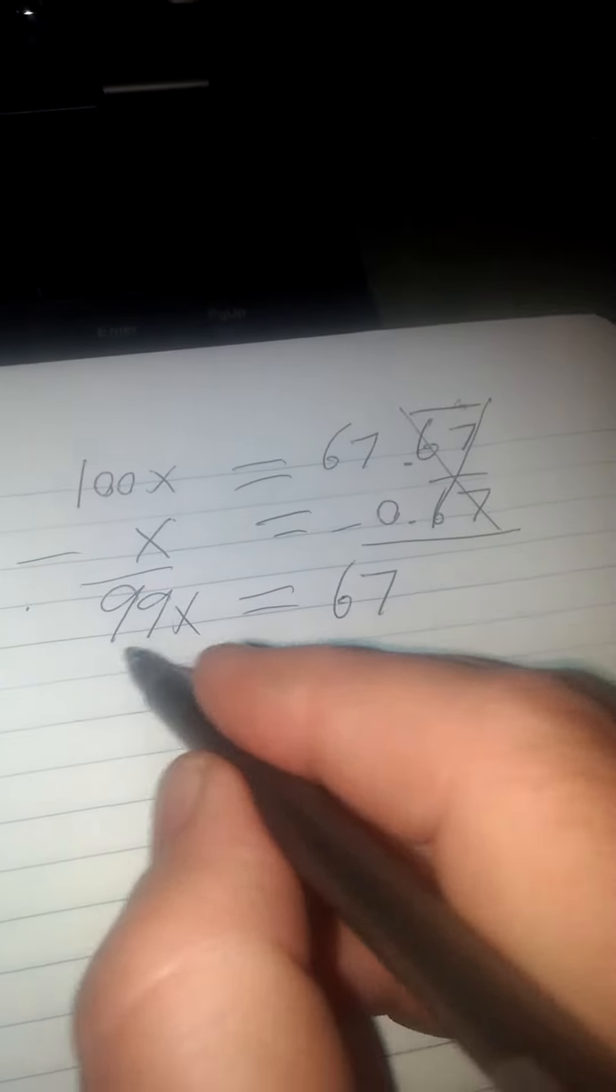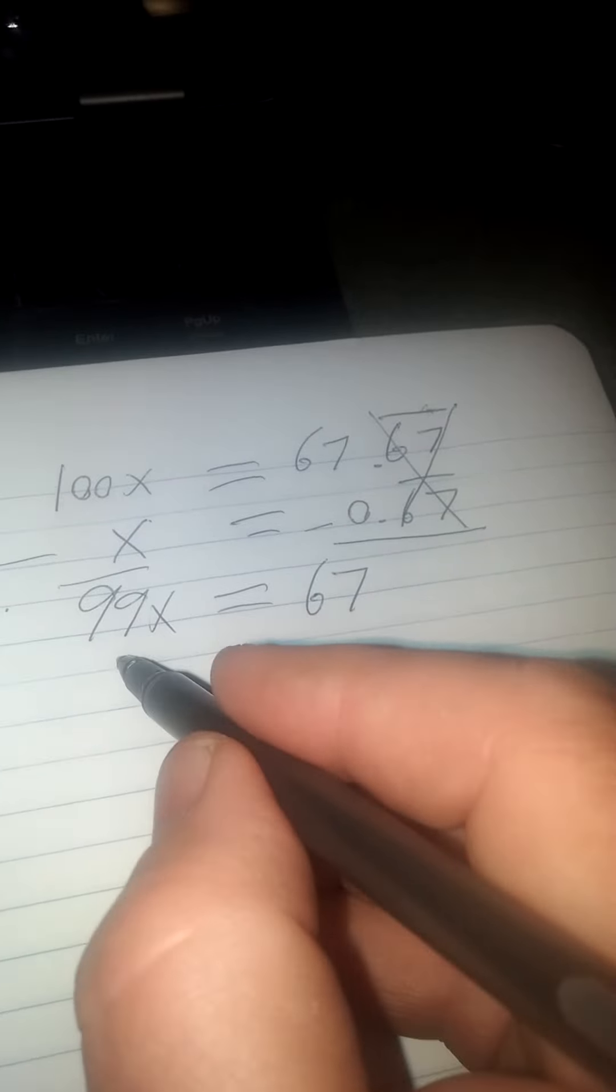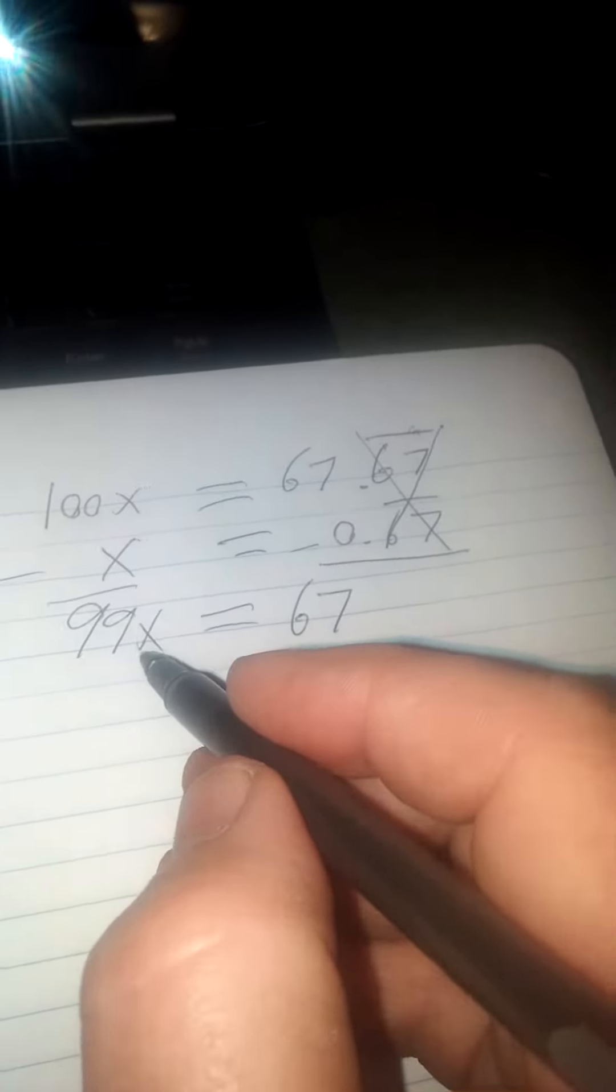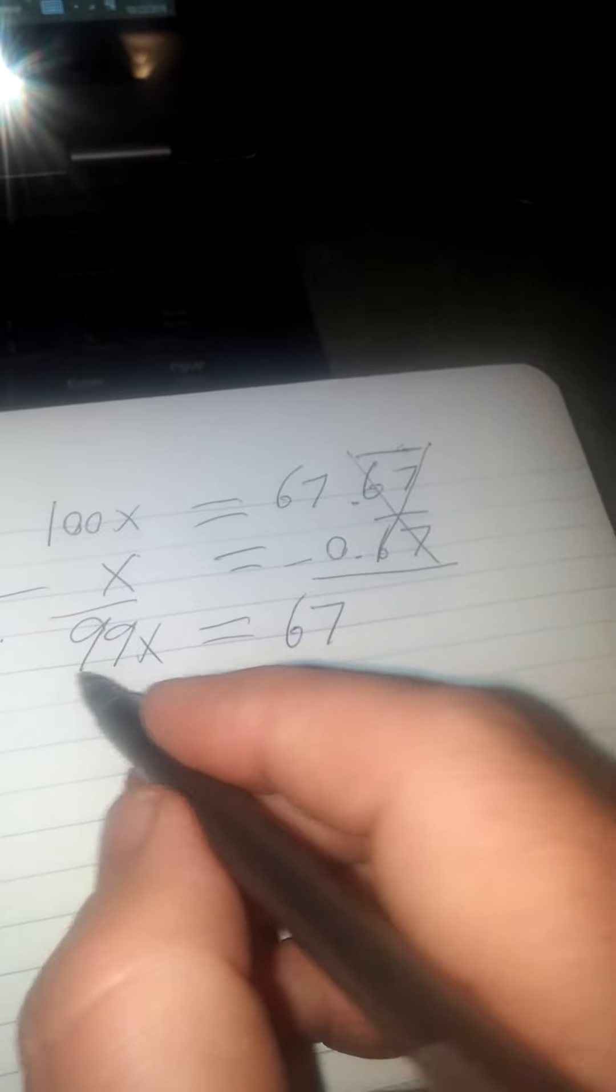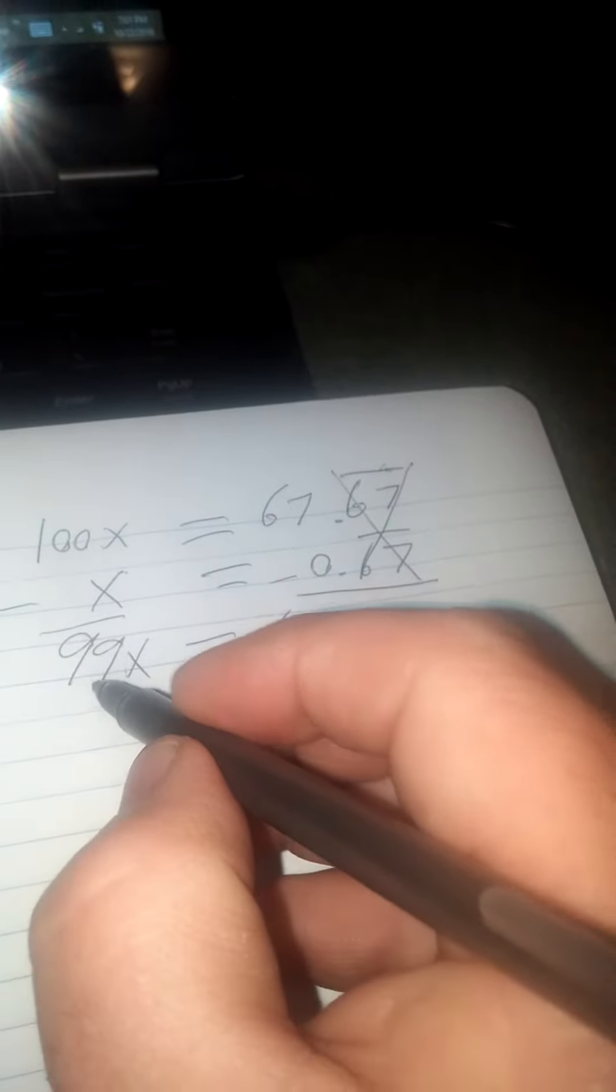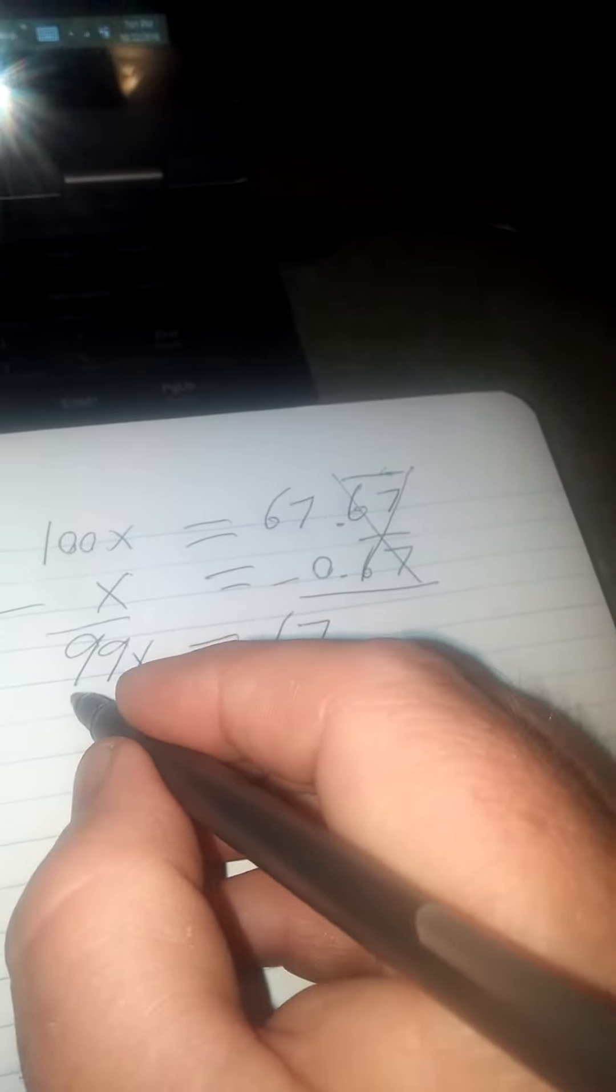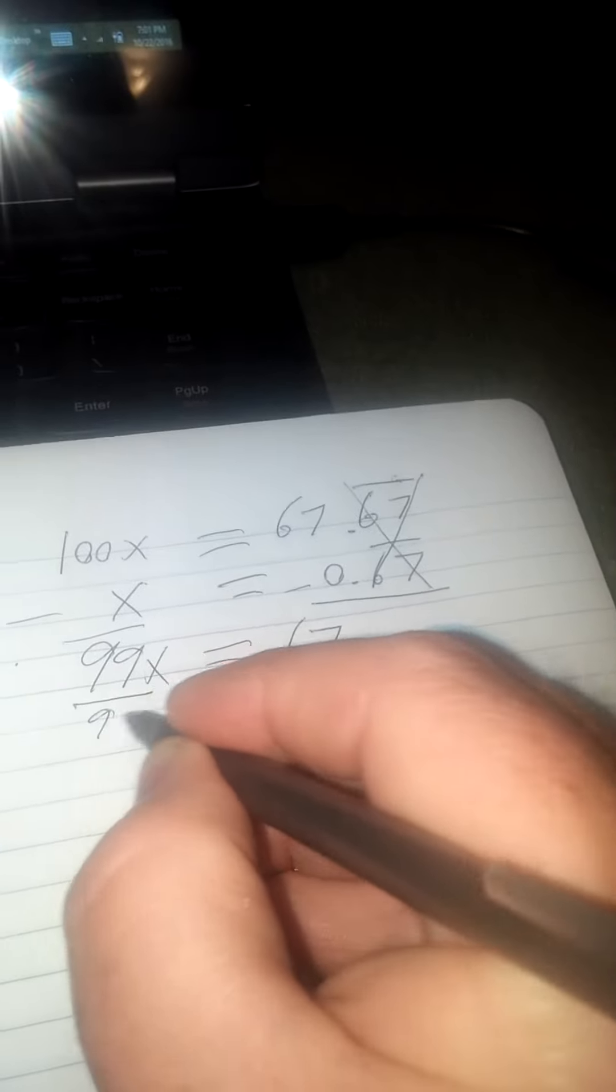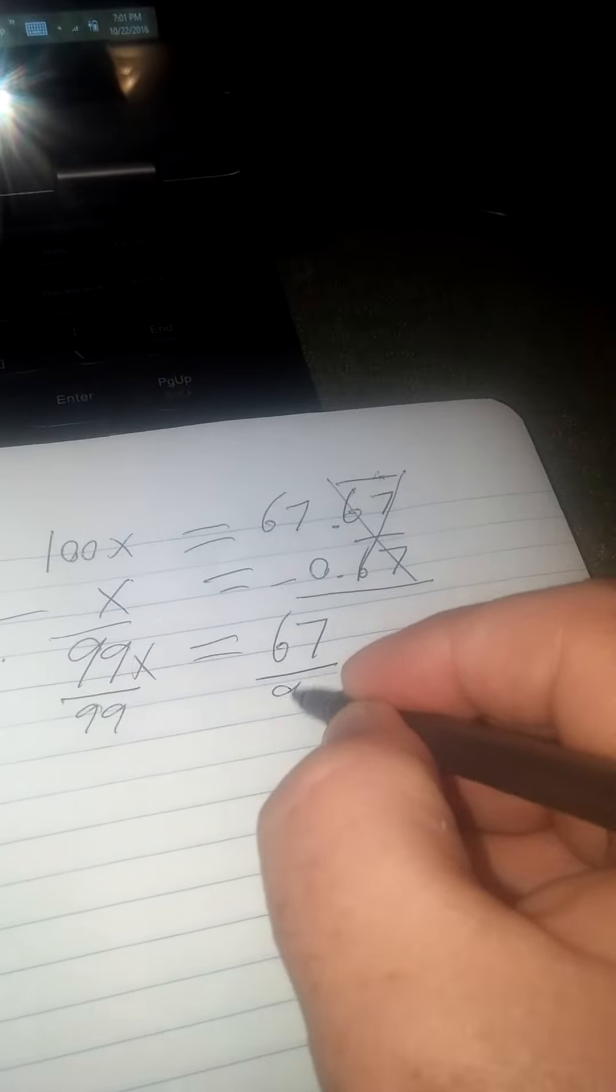Now I'm going to divide both sides by 99 to get my x all by itself because 99 times x is 99 times too big. So I make it 99 times smaller. We divide by 99.